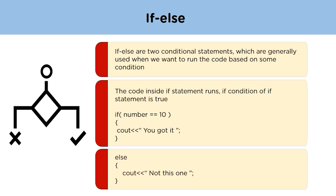Next is if-else statements. If and else are two conditional statements generally used when we want to run code based on some conditions. We run a block of code inside the if statement only if the condition is true. For example, if the number variable is equal to 10, then the block of code executes and prints 'You got it.' Otherwise it runs the else block and displays the message written inside it — 'Not this one.'